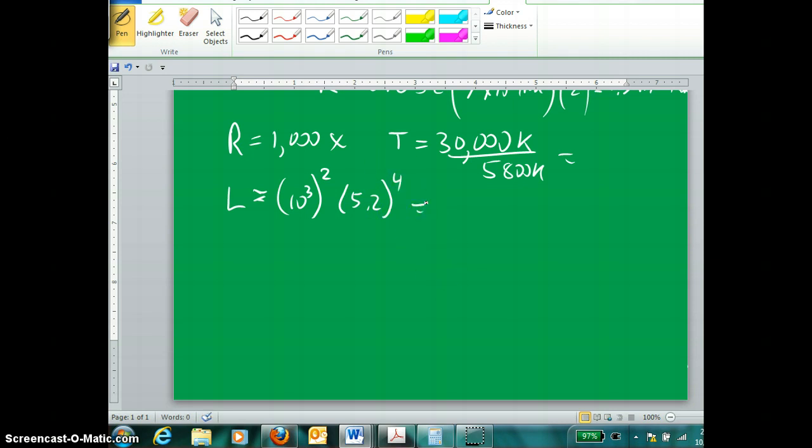And then if we do a quick calculation of 5.2 all raised to the fourth times essentially 10 to the sixth, we get a luminosity that is 7.3 times 10 to the eighth times that of our sun. Because remember, we would be assuming in this equation as being used that we get a one for our sun.